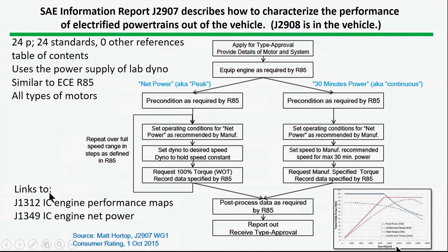J2907 is not a standalone document. The way you measure electric powertrains has to, in some way, link to how you measure internal combustion engine powertrains. So it refers to J1312 and J1349, which are standards for internal combustion engines.